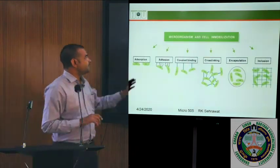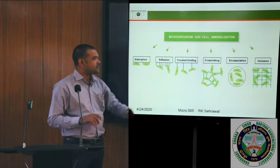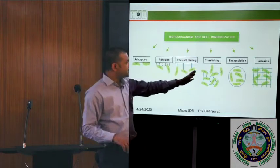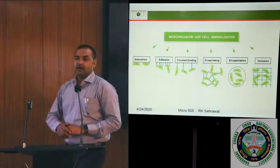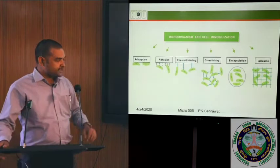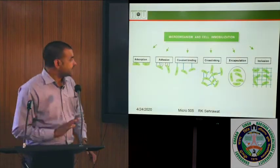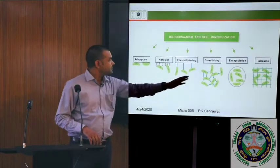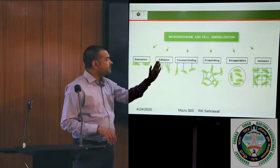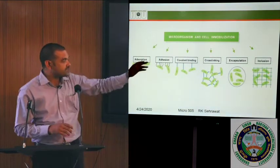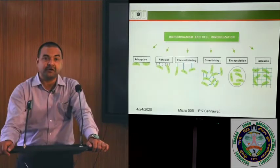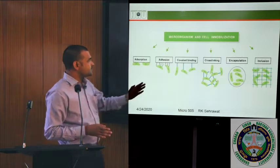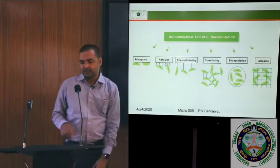The different methods for whole cell immobilization are adsorption, adhesion, covalent bonding, cross-linking, encapsulation, and inclusion — all standardized in lab conditions. But most industries use adsorption, adhesion, encapsulation, and inclusion. There is limited application of covalent and cross-linking because they are more expensive, although these are used in mammalian cells for production of antibodies and vaccines.